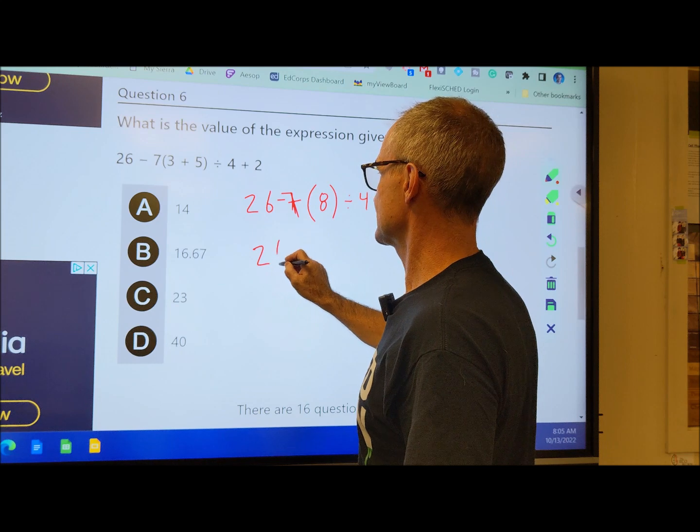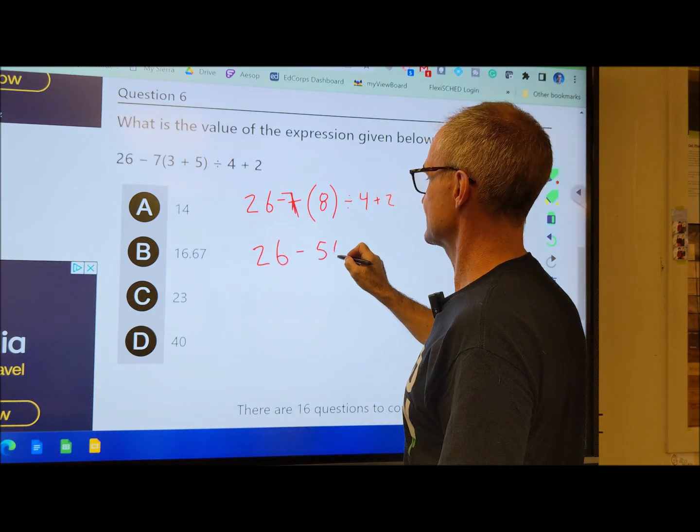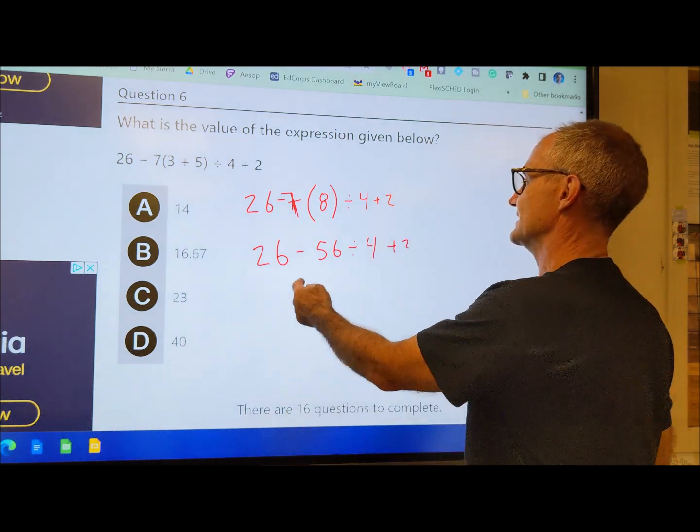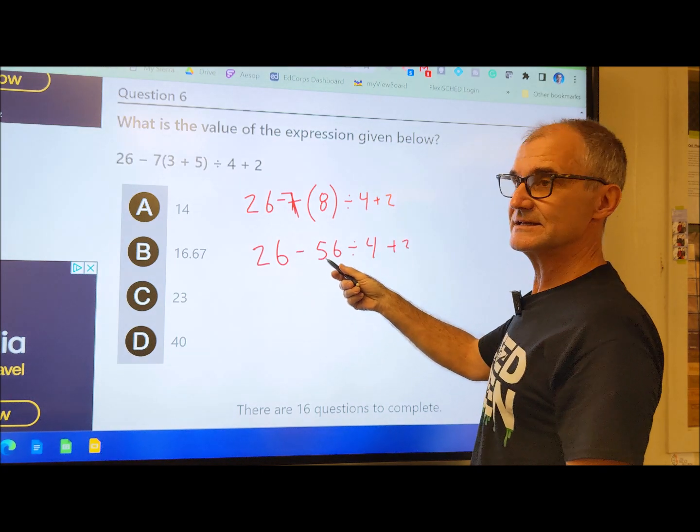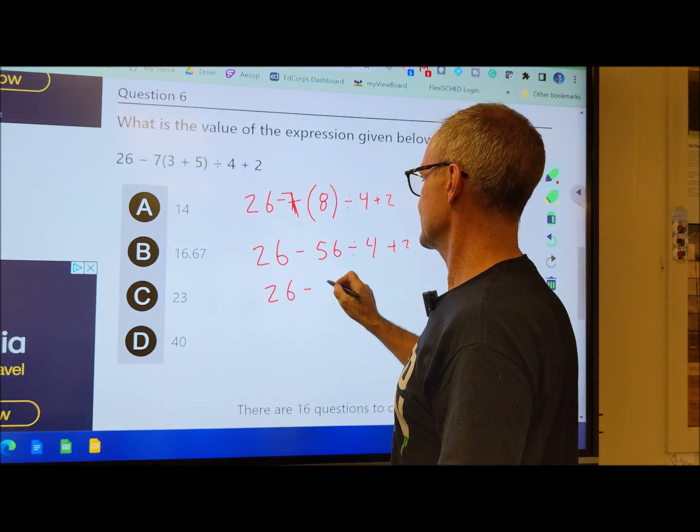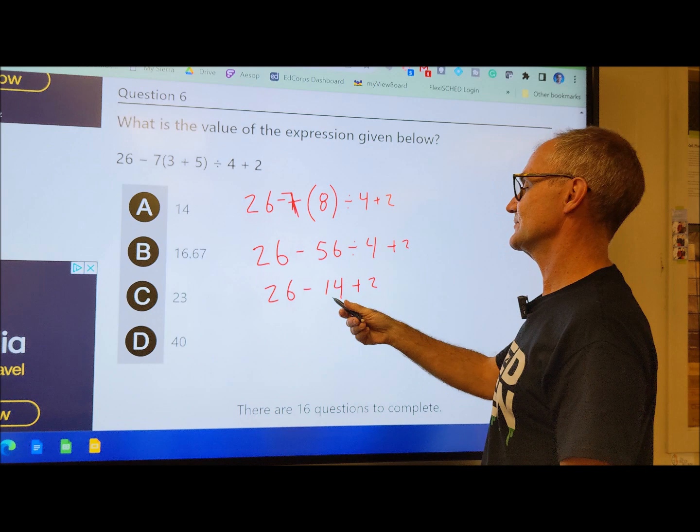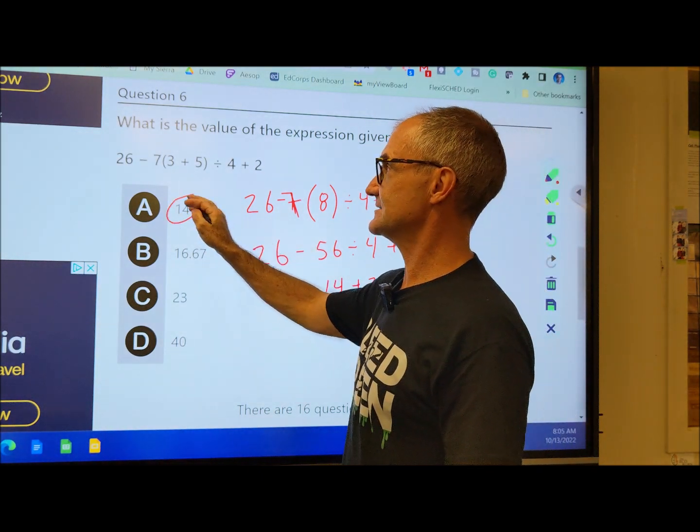So I have 26 minus 7 times 8, which is 56, minus 56 divided by 4 plus 2. I then do the division, 56 divided by 4 is 14. So I have 26 minus 14 plus 2. 26 minus 14 is 12, 12 plus 2 is 14.